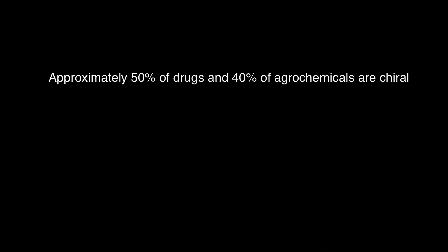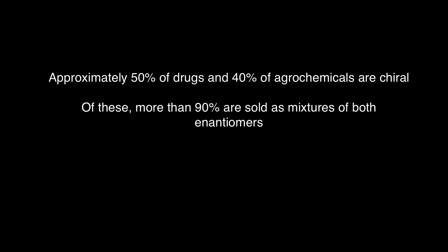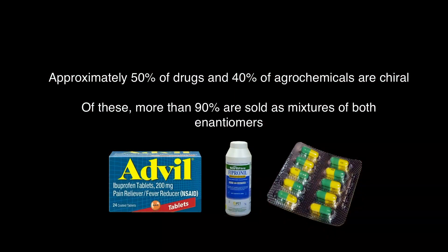Looking at the current agrochemical and pharmaceutical industry, roughly about 50% of drugs and 40% of agrochemicals are chiral, meaning they have a certain handedness. And of those, more than 90% are sold as mixtures of both-handed molecules, because it's so hard to separate them — they have the same atomic constituents, the same weight, and the same electronic charge, making it really challenging to come up with ways to separate them.